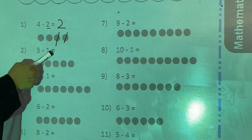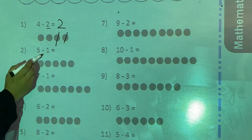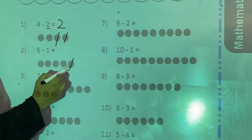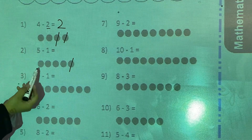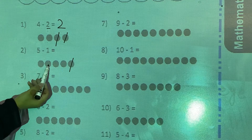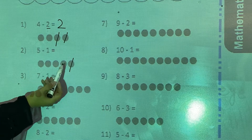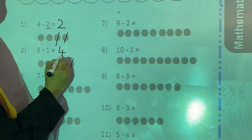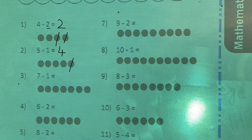Second one: 5 minus 1. You have to cut 1. Count the remaining: 1, 2, 3, 4. So 4 are left — 4 is the answer.